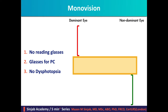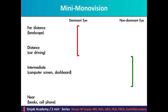This type does not induce dysphotopsia — that is, glare and halos, especially at night. Mini-mono vision is a modified form of mono vision where the non-dominant eye is targeted to be myopic by minus 0.5 to minus 0.75 diopters. Therefore, the intermediate vision will be good, but at the expense of near vision.